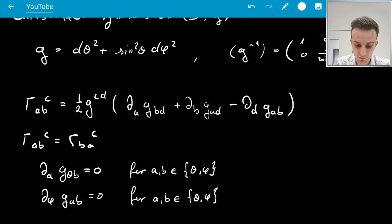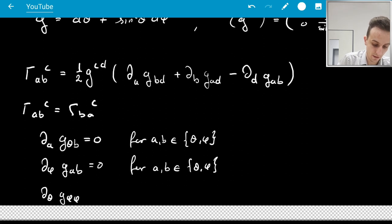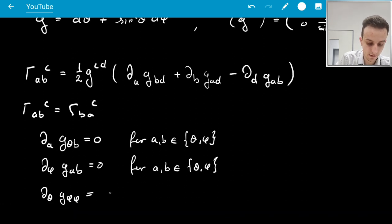So in particular, none of the coefficients of the metric depend on phi and only the phi component depends on theta. So in particular, I have the G_θθ, ∂_θ G_φφ is 2 sin θ cos θ.